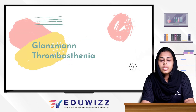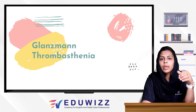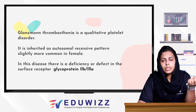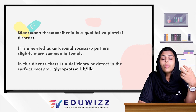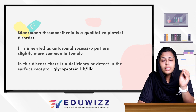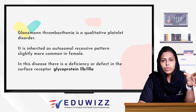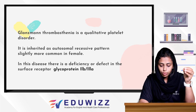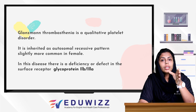Glanzmann Thrombasthenia. It is a coagulation disease involving platelet issues — specifically platelet deficiency. It is a qualitative platelet disorder and an autosomal recessive disease. In this disease, there is a deficiency or defect in the surface receptor glycoprotein 2B3A.